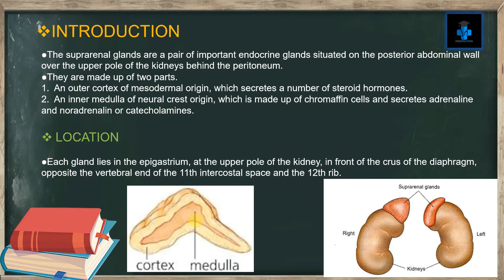Location: Each gland lies in the epigastrium at the upper pole of the kidney, in front of the crest of the diaphragm, opposite the vertebral end of the 11th intercostal space and the 12th rib.